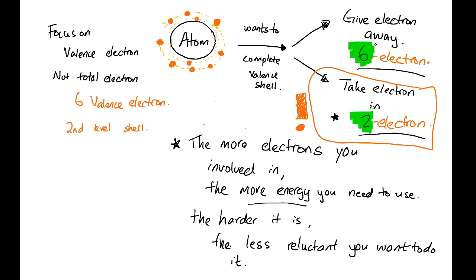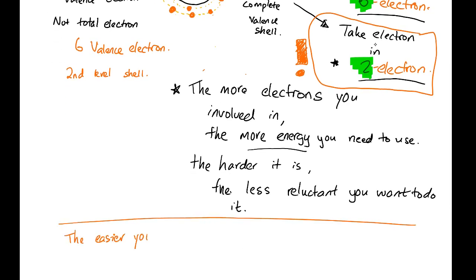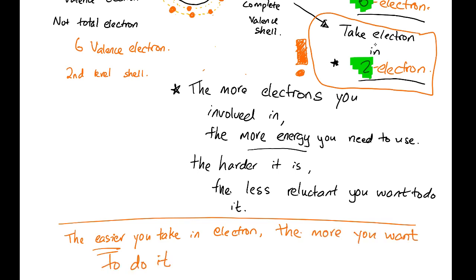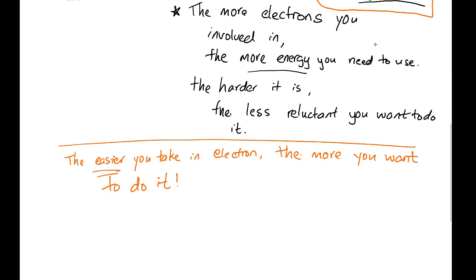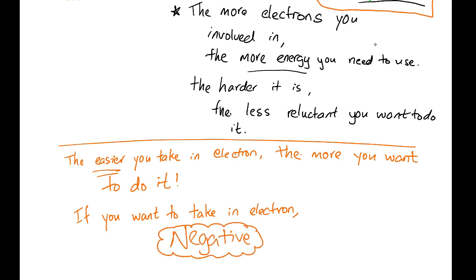For this atom, it will want to take in electrons in order to become negative because it uses less energy. The easier it is to take in electrons, the less energy you use, and the more you want to do it. Less electrons, less energy — it's easy and you want to do it. So if an element really wants to take in electrons to become negative, we say that element is very electronegative.